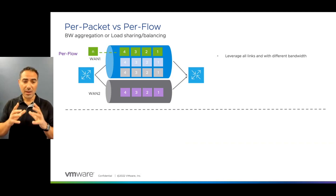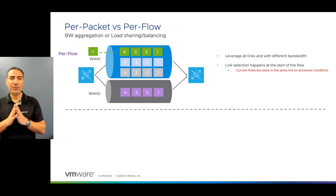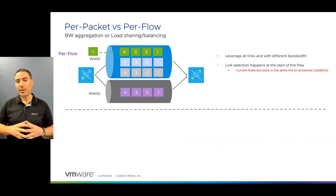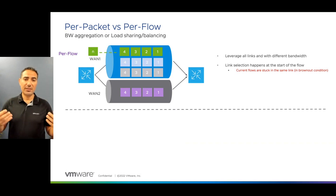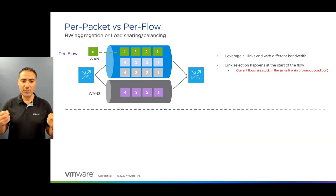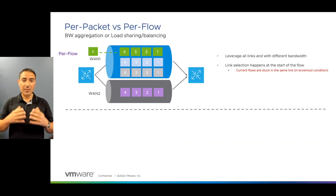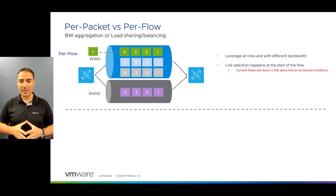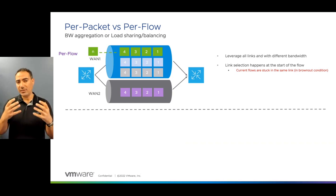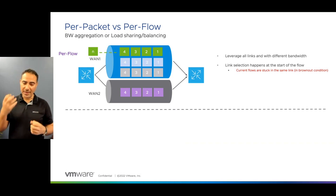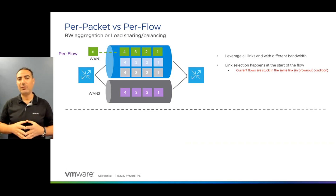This technique is capable of leveraging all of the transport circuits between the source and destination, which is great. However, the link selection for each flow happens only at the beginning of the flow. So what happens if the circuit's characteristics change later on? Nothing happens — the current flows are stuck on the same circuit until the flow is over. I'm talking about a brownout condition here, not a blackout condition. When the circuit goes down, the other circuit takes over immediately. In a brownout, the circuit is still up but not capable of providing the same characteristics for which it was originally selected.